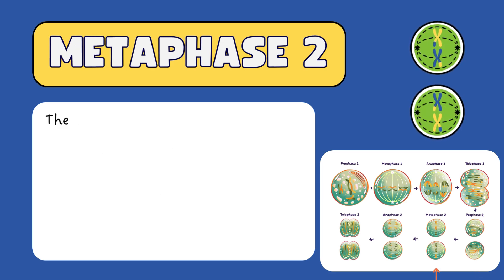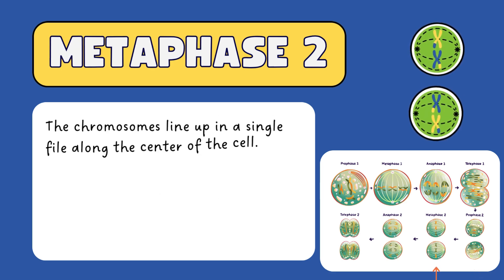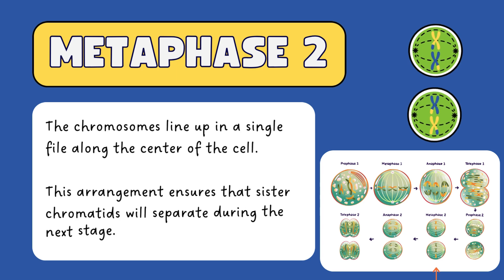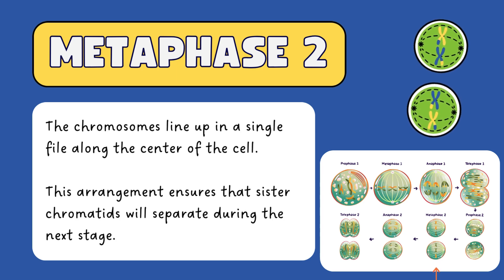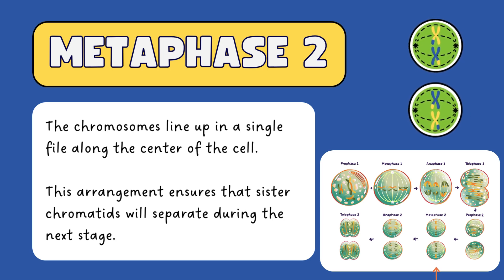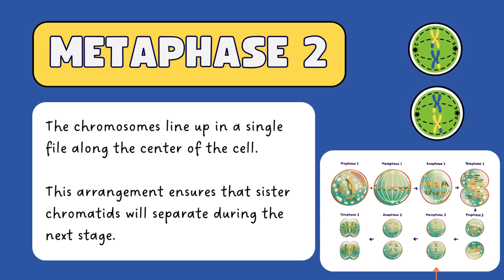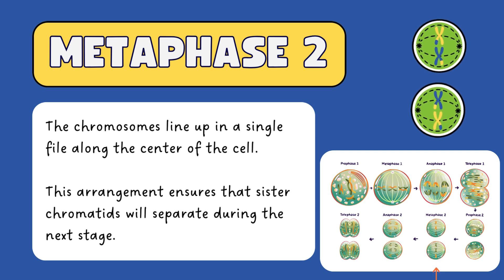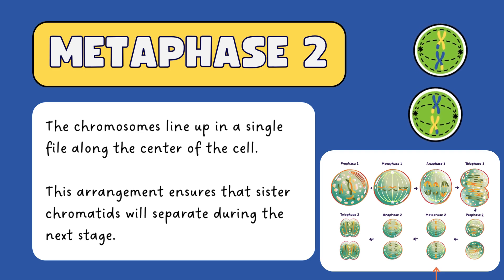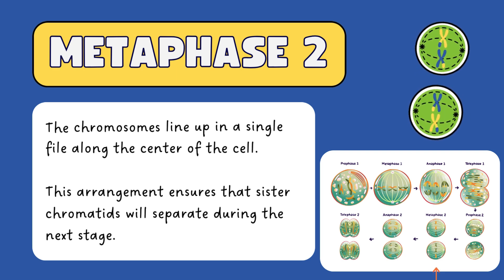In metaphase II, the chromosomes line up in a single file along the center of the cell. This arrangement ensures that sister chromatids will separate properly in the next stage.